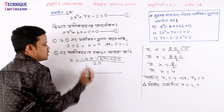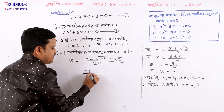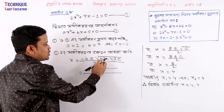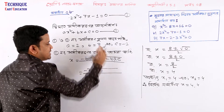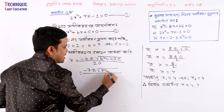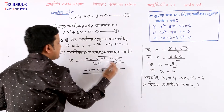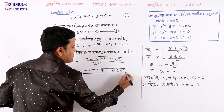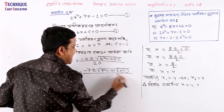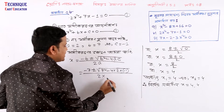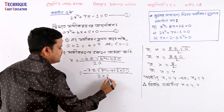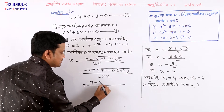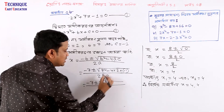See, a equals 2, b equals 7, and c equals minus 1. So minus b is minus 7. Then minus 7 plus minus root, 2 minus 7 squared, minus 4 into r minus 2.